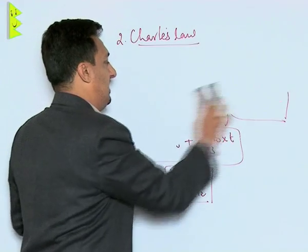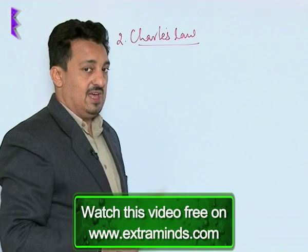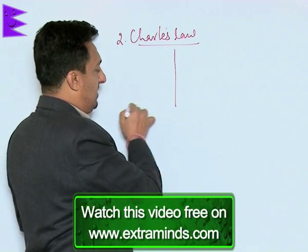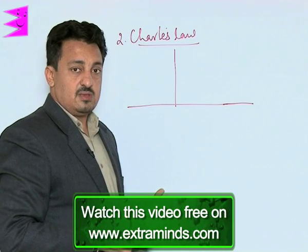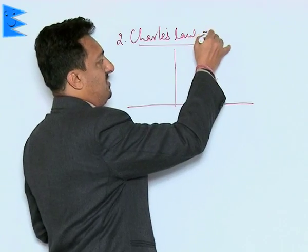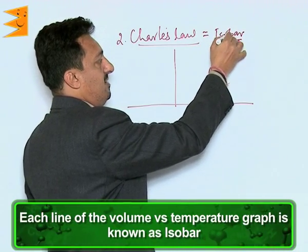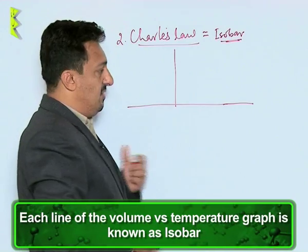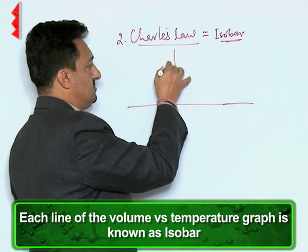This law gives us a clear idea that the degree Celsius scale we normally use in day-to-day life is not correct. I can draw a graph for this now. Since in the study of this gas law we keep the pressure constant, these graphs or the study is called isobar - iso means constant, bar means pressure.